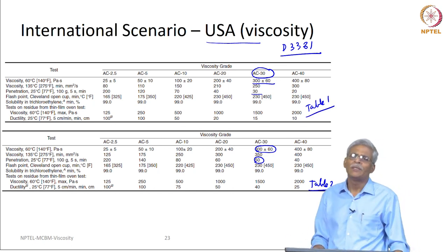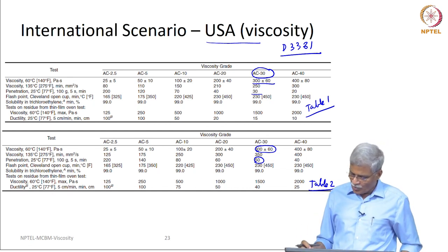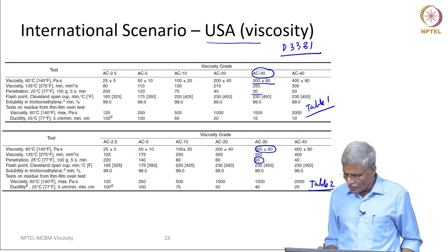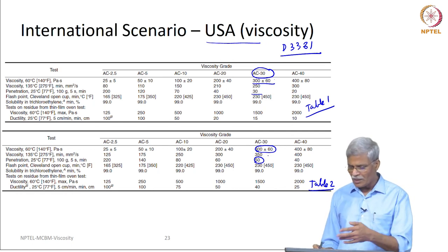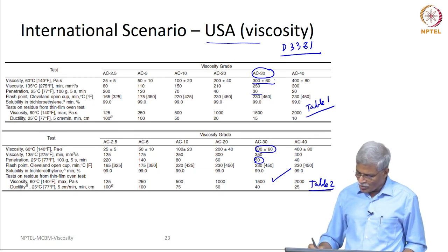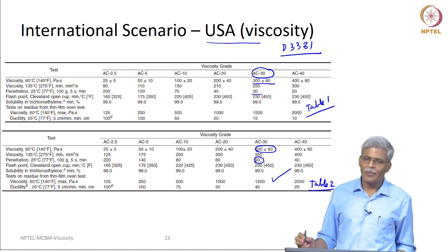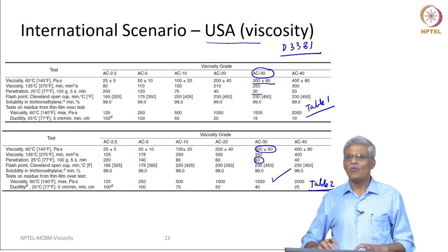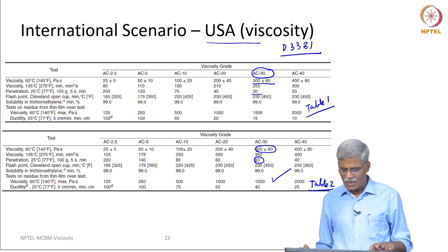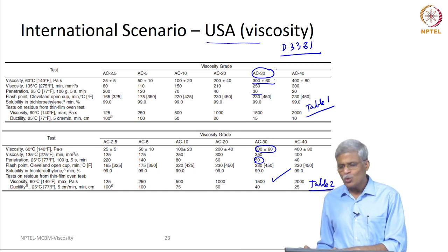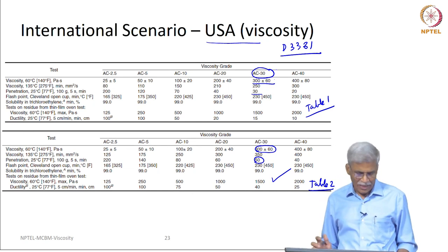If you are a highway engineer asked to choose bitumen from Table 1 or Table 2, both viscosity values are the same but only the penetration values are different. The Table 2 material has more penetration compared to the Table 1 material, and based on our earlier discussion, you will always go for Table 2 material because it is a much superior material. In fact, in the US, if viscosity grading is used, the default table in tender documents is Table 2, not Table 1, because Table 2 always gives a superior material.